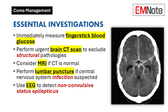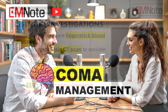For imaging, CT scans and MRIs let us actually visualize the brain, so we can look for structural abnormalities — things like bleeding, stroke, or tumors. In the ER, time is of the essence, so a CT is usually our go-to because it's quick and can often give us the information we need right away. We might need an MRI later for more detail, but in an emergency the CT is usually enough.